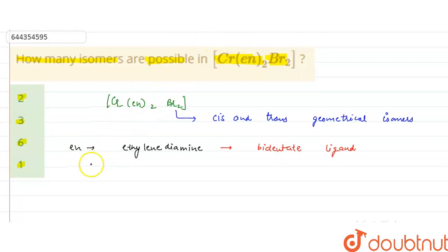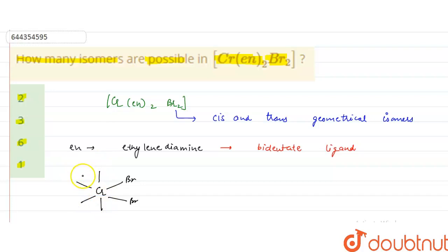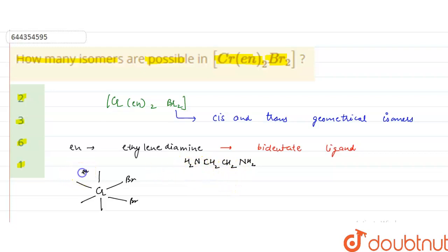If we draw the cis isomer first, it will have chromium with 2 bromine ligands and 4 bonds with the nitrogen atoms of ethylenediamine. Ethylenediamine is NH₂-CH₂-CH₂-NH₂, and its nitrogen atoms bond with the central chromium metal atom, as represented here.